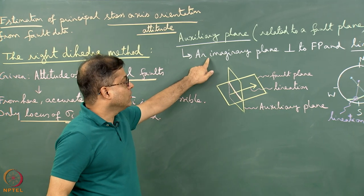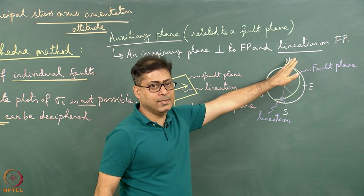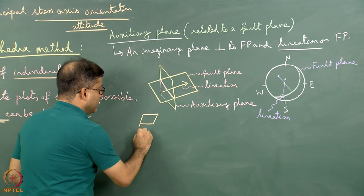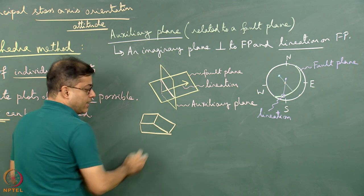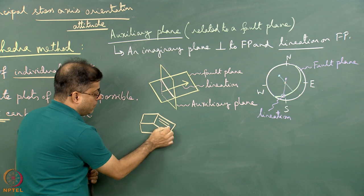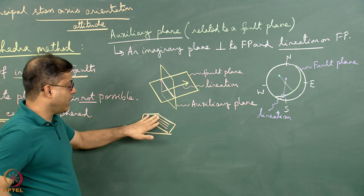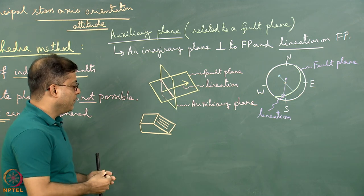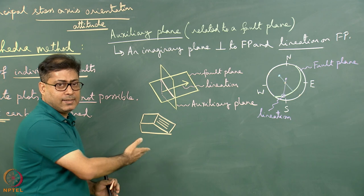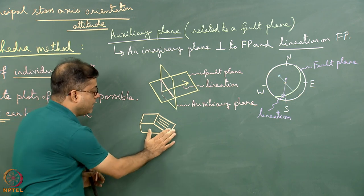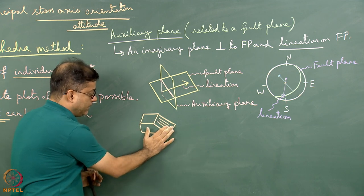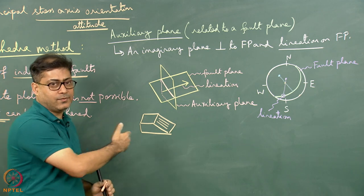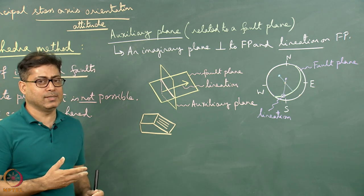Sometimes lineations are present, sometimes not. When present, if I put my hand on the fault plane and rubbing from top downward feels smooth, the missing hanging wall block went down — a dip-slip normal fault. If rubbing from bottom upward feels smooth, the hanging wall moved upward — a reverse or dip-slip reverse fault. Similarly, strike-slip and oblique-slip faults can also be explained this way.